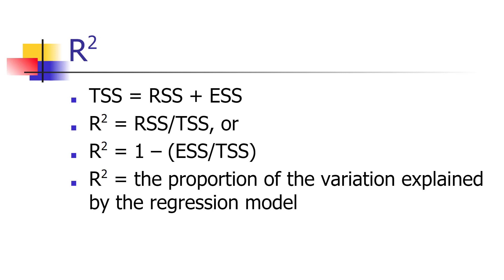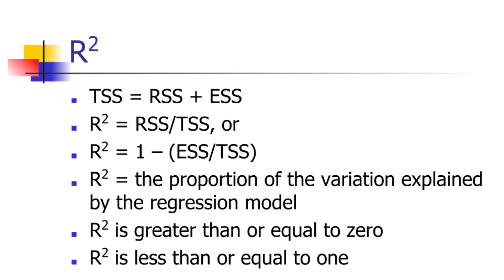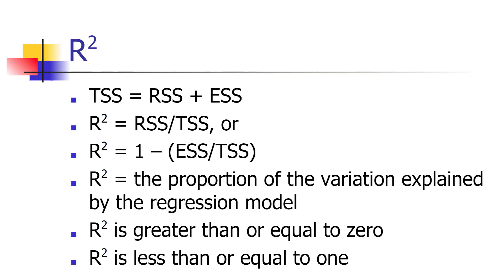R-squared will always be between 0 and 1. If R-squared equals 1, the regression sum of squares equals the total sum of squares, meaning the regression explains all the deviation of y from its mean — in practice, all the points fall exactly on the line. R-squared equals 0 only if the explained sum of squares is 0 and all deviation of y from its mean is unexplained, meaning the regression explains none of the variation in y. An R-squared of 0.9 means the regression equation is explaining 90% of the deviation of y from its mean.